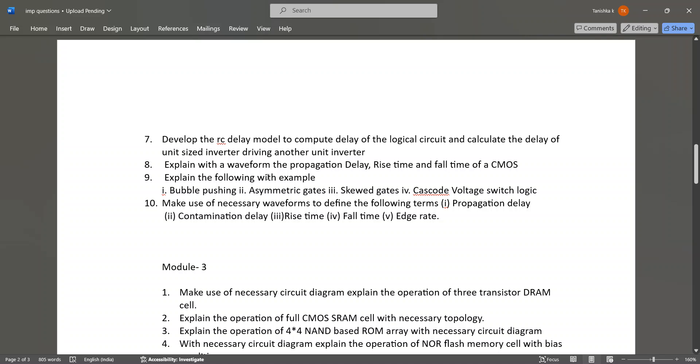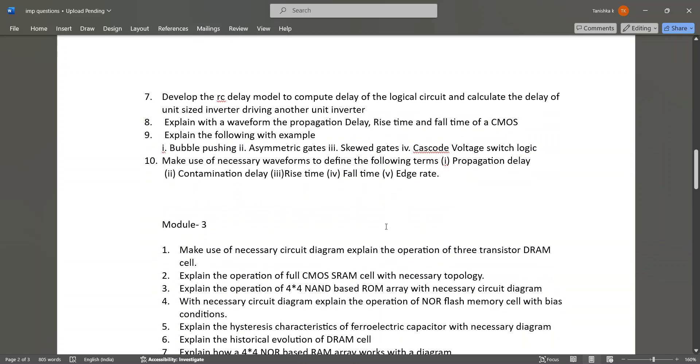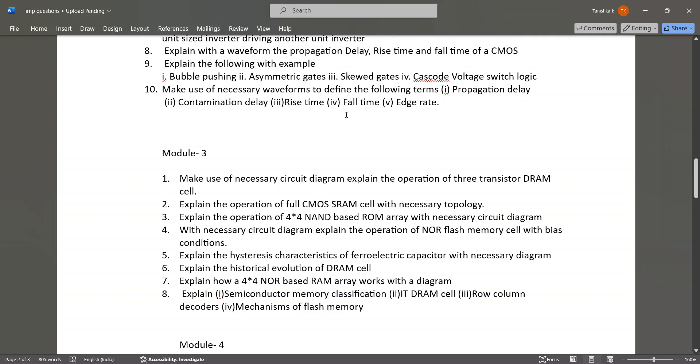Explain the following with example: bubble pushing, asymmetric gates, skewed gates, cascode voltage switch logic. Then make use of necessary waveforms to define the following terms: propagation delay, contamination delay, rise time, fall time, edge rate. In Module 3, the important questions are: